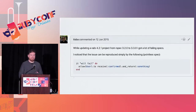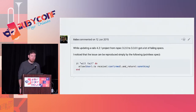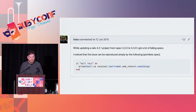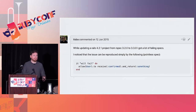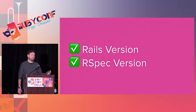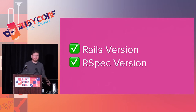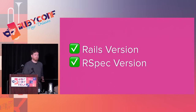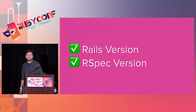Looking at the full text of the issue as submitted, it says: 'While updating a Rails 4.2.1 project from RSpec 3.2.0 to 3.3.0, I got a lot of failing specs. I noticed that the issue can reproduce simply,' and then the user provides the test we just looked at. There are a few really great things about this bug report. The user provided a Rails version and an RSpec version, and as a maintainer, that means I can hone in very quickly on which exact things I'm going to need to begin debugging.